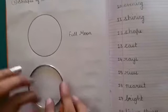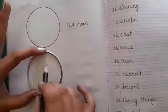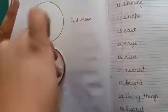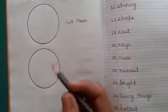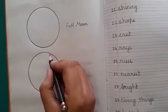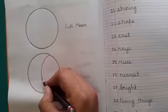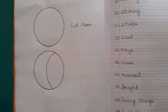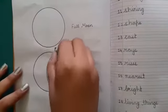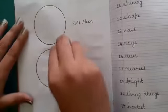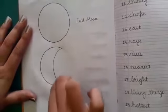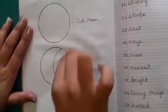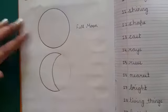Again take a bangle and draw a circle. Then we will draw one semicircle like this and erase the rest. So this becomes half moon.